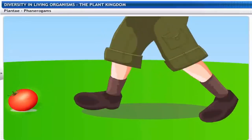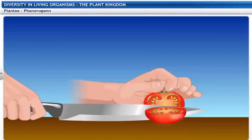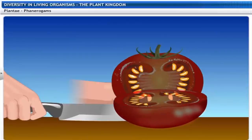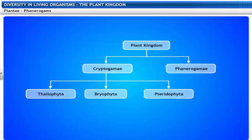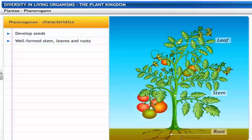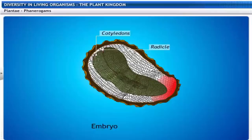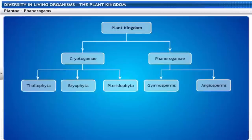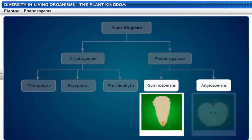Tomatoes have a lot of seeds inside them — the seeds are the result of the reproductive process. This makes the tomato a Phanerogam. All plants that develop seeds and have well-formed stem, leaves and roots belong to the sub-kingdom Phanerogamae. Phanerogams contain embryo along with stored food that helps the embryo to germinate. Based on whether the seeds are naked or enclosed in fruits, Phanerogams are further classified into Gymnosperms and Angiosperms.